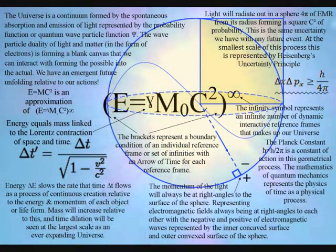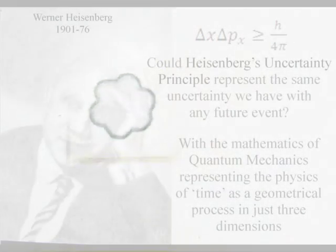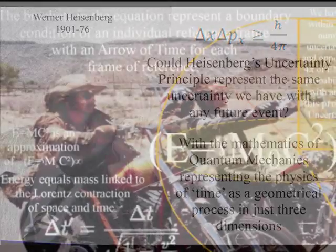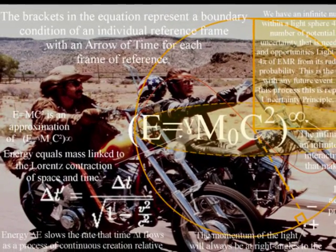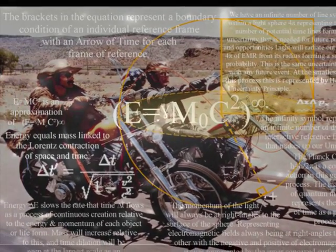The c² in the equation represents light radiating out in all directions at a constant speed, forming a sphere of electromagnetic radiation from its radius, forming a square of probability. This is the same probability we have with any future event, because the process forms the flow of time itself, photon by photon. The brackets represent the boundary condition of the reference frame formed by the energy, and the infinity symbol represents an infinite number of reference frames that make up our universe.